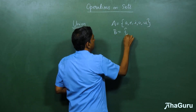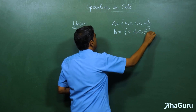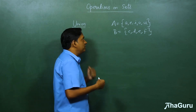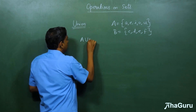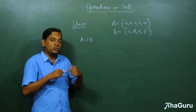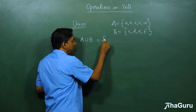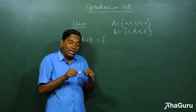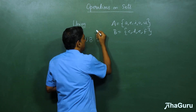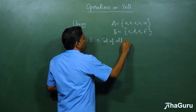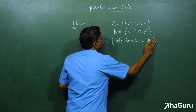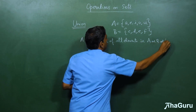And we have set B which is C, D, E, F — some four letters. Now the question is, how do we define the union of these two sets? We write A union B — the U symbol represents union — and the result is also a set. It is going to contain all elements in the first set or second set or both. So it is the set of all elements in A or B or both.